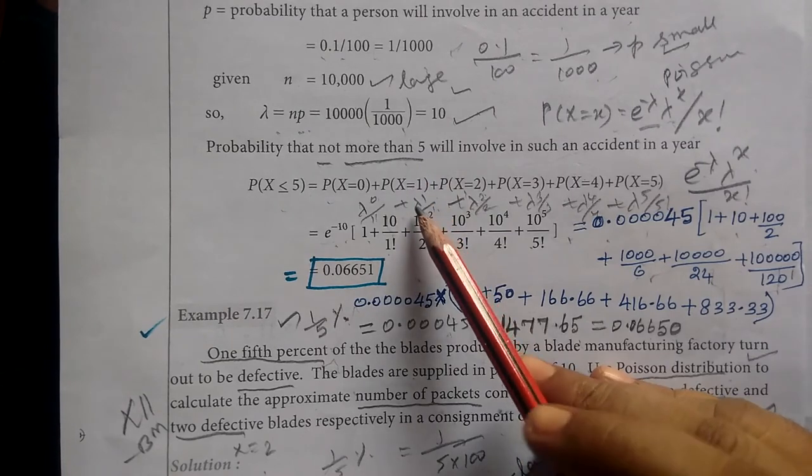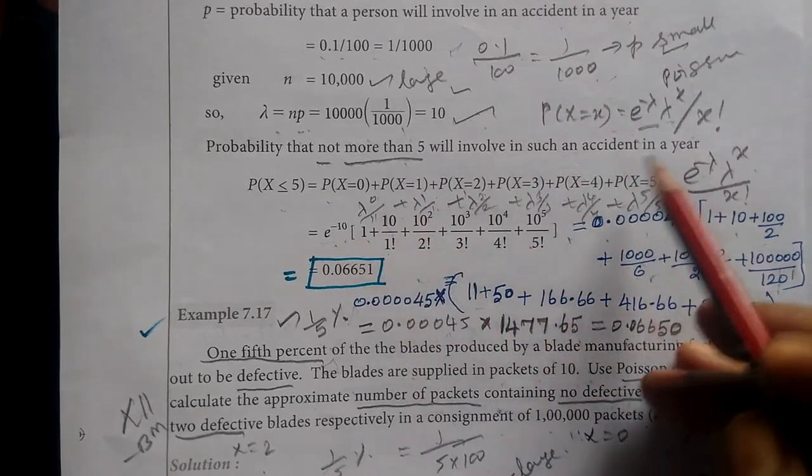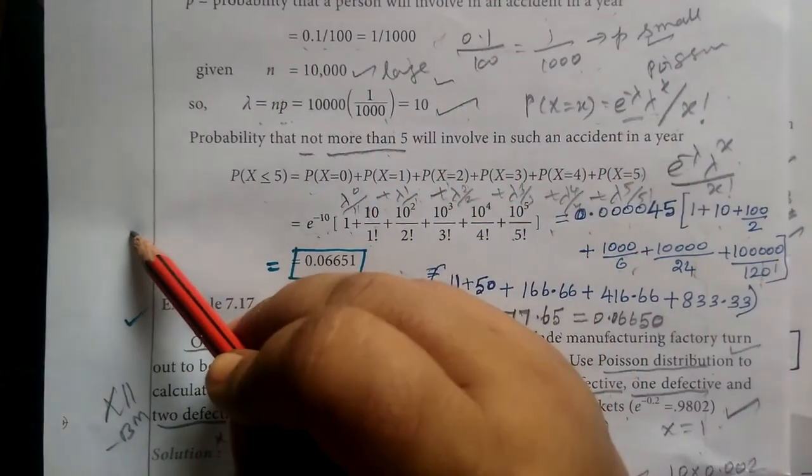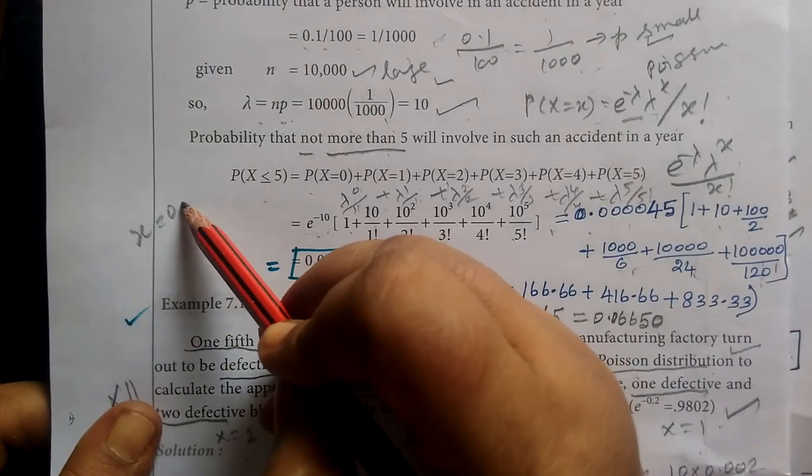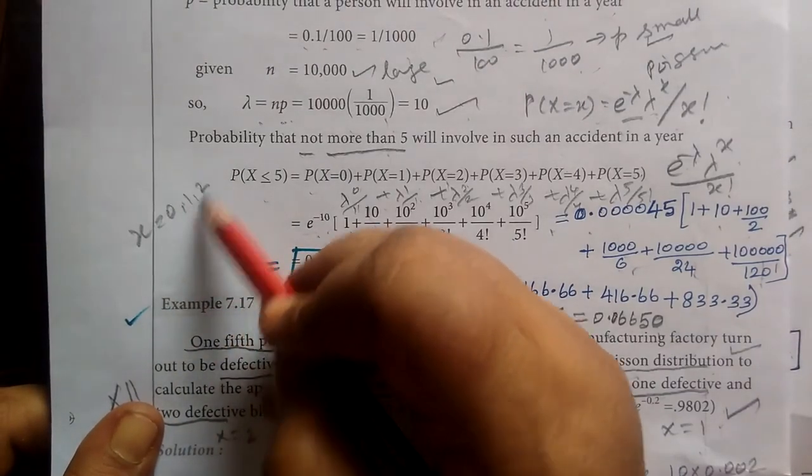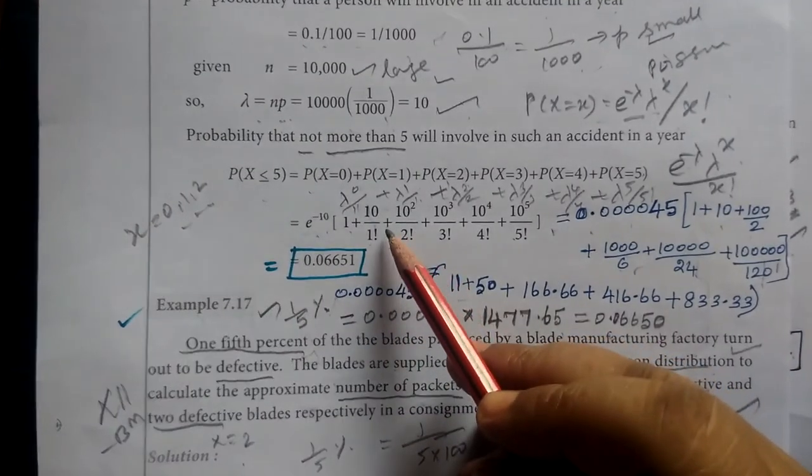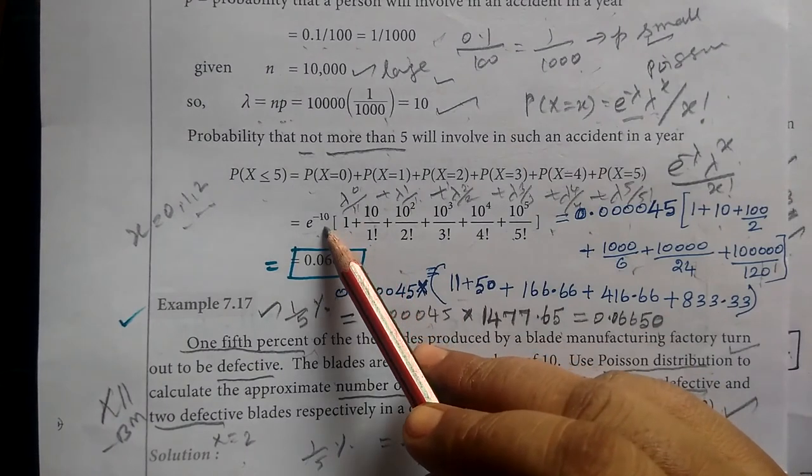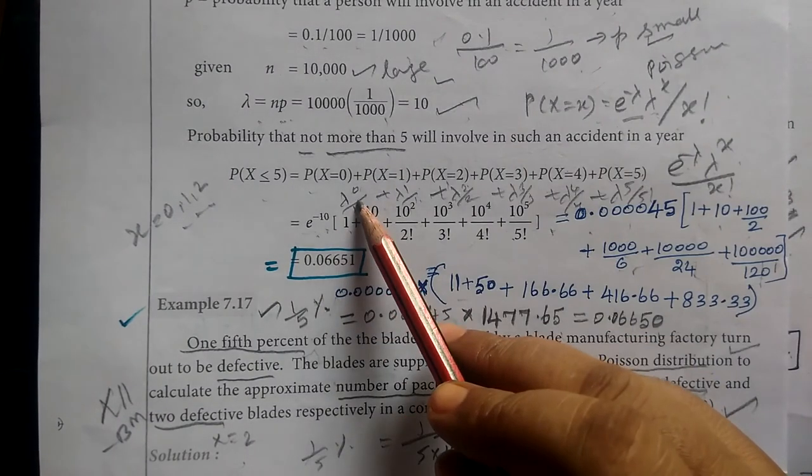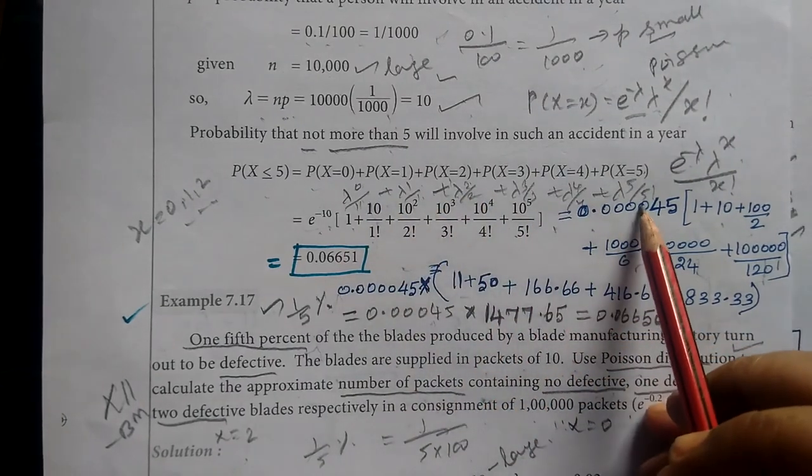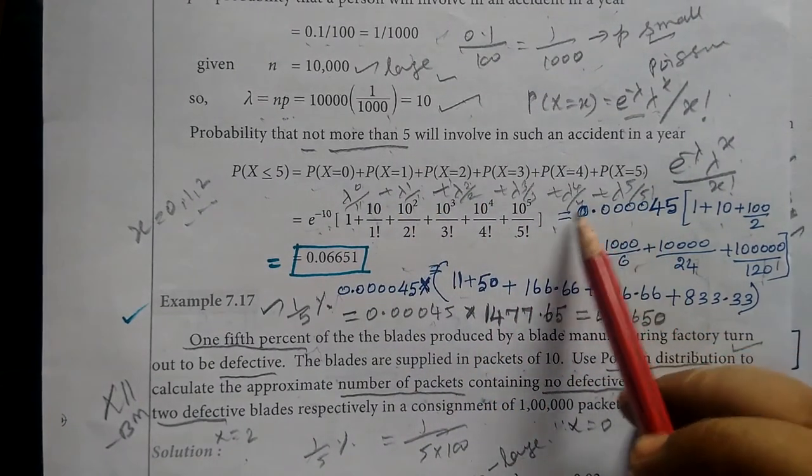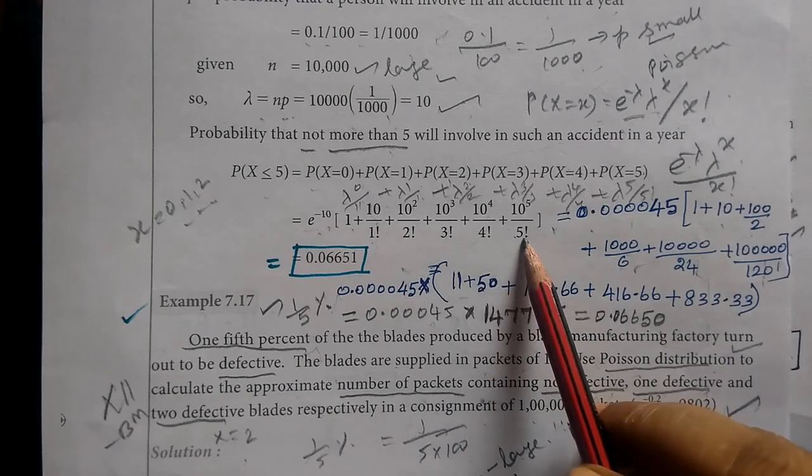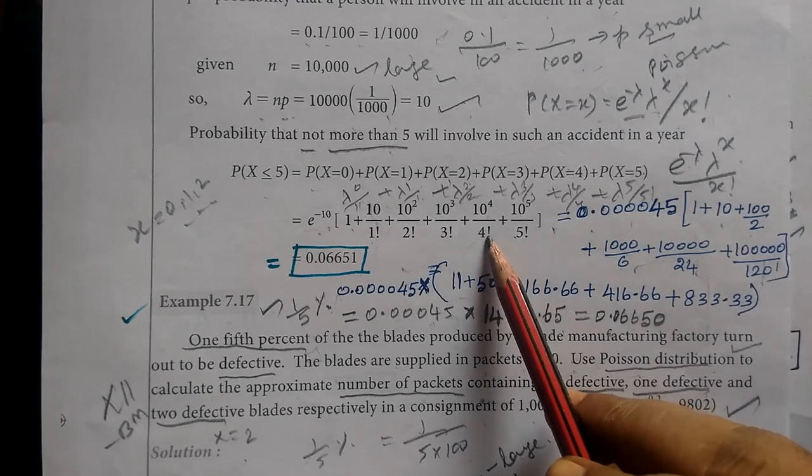In Poisson distribution, x values start from 0, 1, 2, 3 to infinity. So e^(-λ) times λ^0/0!, λ^1/1!, λ^2/2!, λ^3/3!, λ^4/4!, λ^5/5!. With λ=10, substitute these values. 5! = 120, 4! = 24, 3! = 6, 2! = 2.